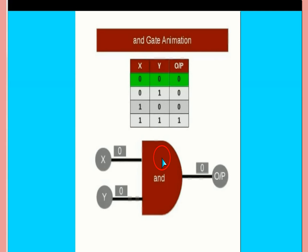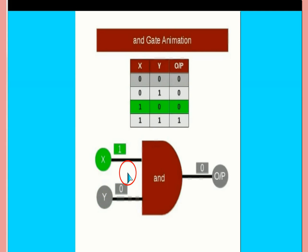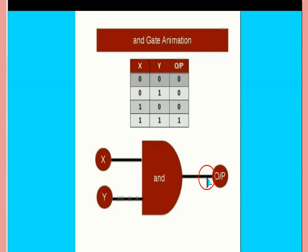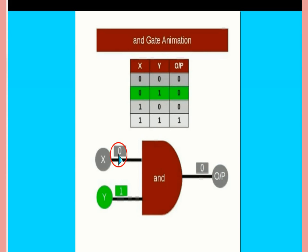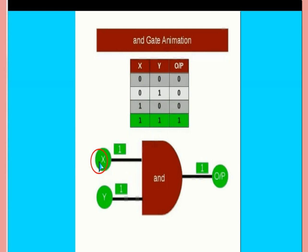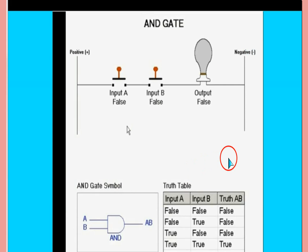The AND gate has the logic that if both inputs are one, then only the output will be one. If there is zero, zero, this is zero. And zero, one, again zero. One, zero means again zero. One, one means only one. This is the AND gate.